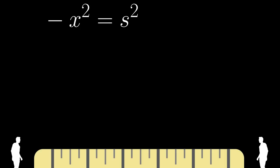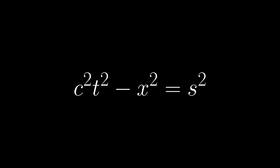Just as light-like events have an interval of zero for all observers, time-like and space-like events have a constant interval as well, whatever it may be.